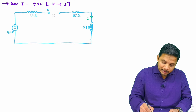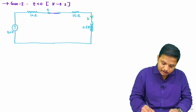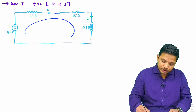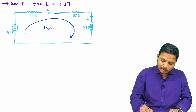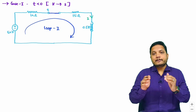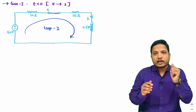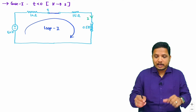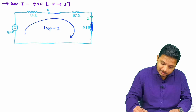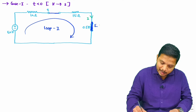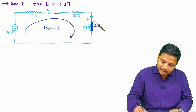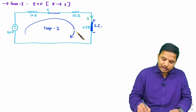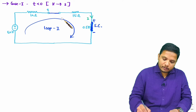Let me remove this and connect the switch at location 1 for t less than 0. Because of the 50V battery there will be a flow of current in this loop — let us say the current in this loop is I. Since the switch is at location 1 before t equals 0 for a longer duration, the inductor will get energized completely and will act like a short circuit, with polarity plus-minus. Current will flow in this loop and we can apply Kirchhoff's Voltage Law.